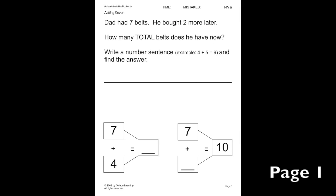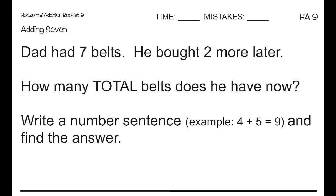On this page, we're going to focus on the top first. Here we have a word problem. Let's read it and the directions first. Dad had 7 belts. He bought 2 more later. How many total belts does he have now? Write a number sentence and find the answer.